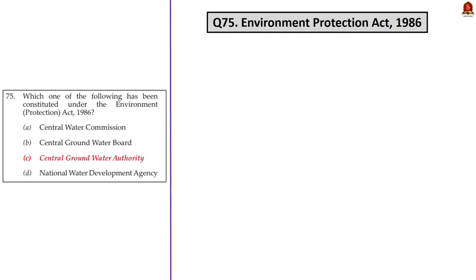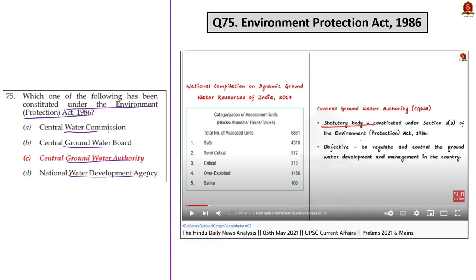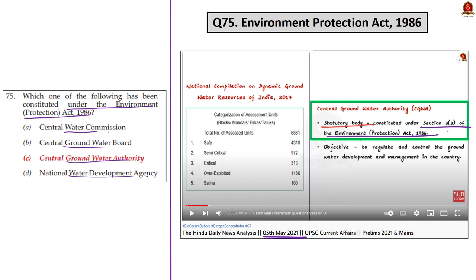Question 75 asks about the body constituted under the Environment Protection Act 1986. The options are Central Water Commission, Central Groundwater Board, Central Groundwater Authority, and National Water Development Agency. In our 5th May 2021 analysis, we discussed that Central Groundwater Authority is constituted under Section 3 of the Environment Protection Act 1986. So the correct answer is option C — Central Groundwater Authority.